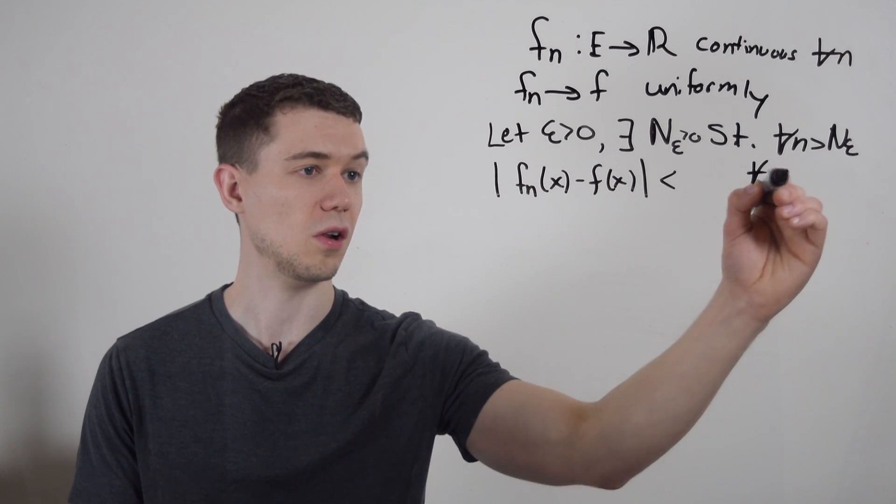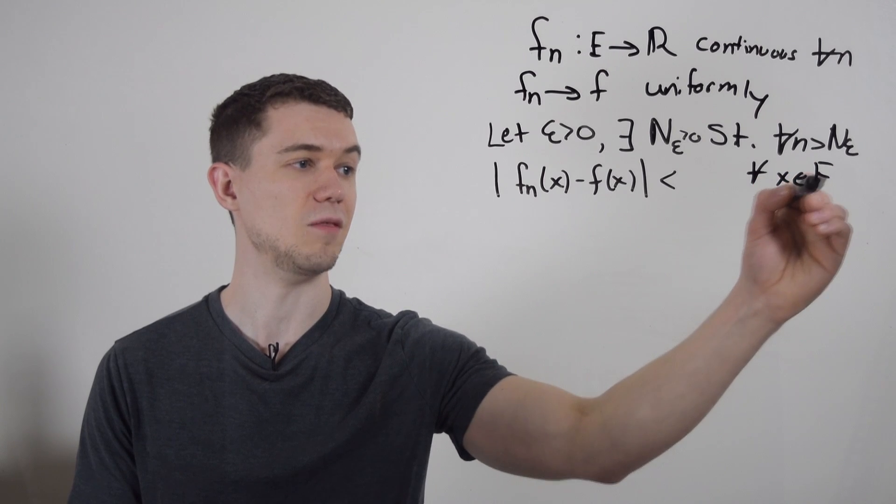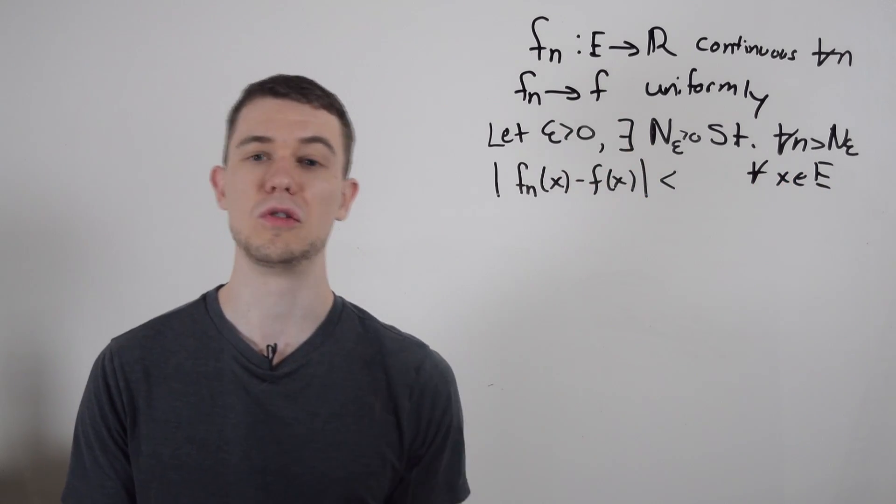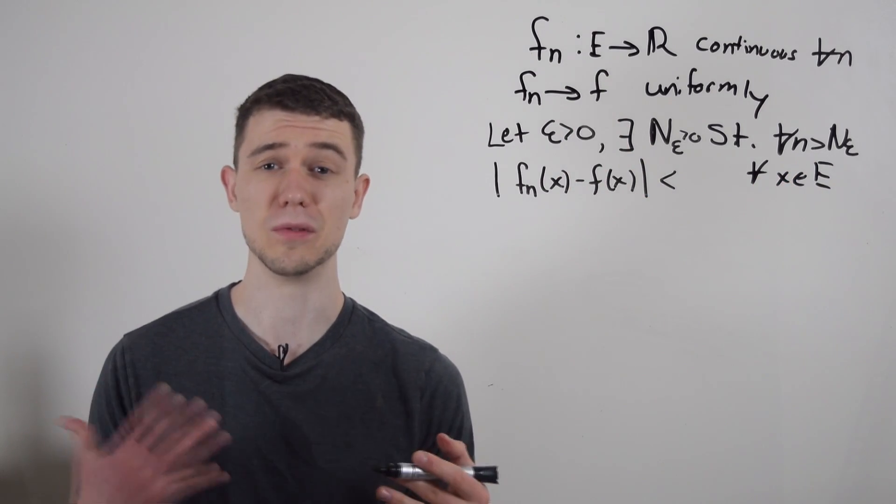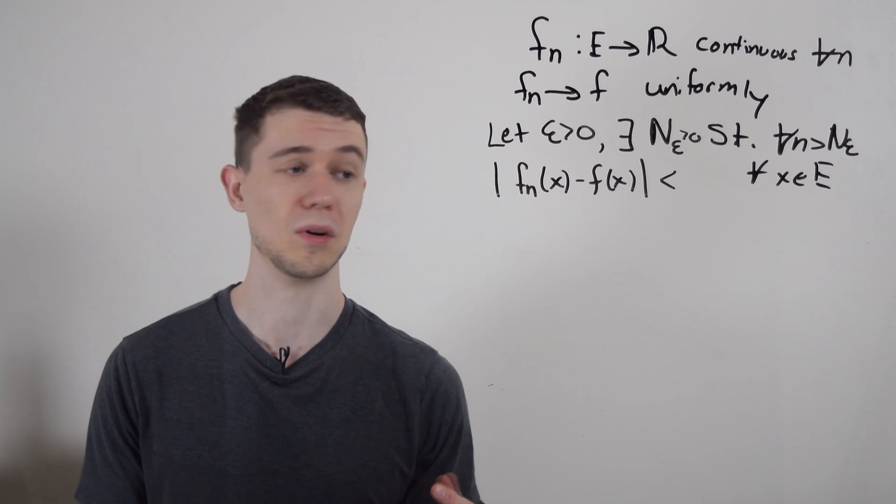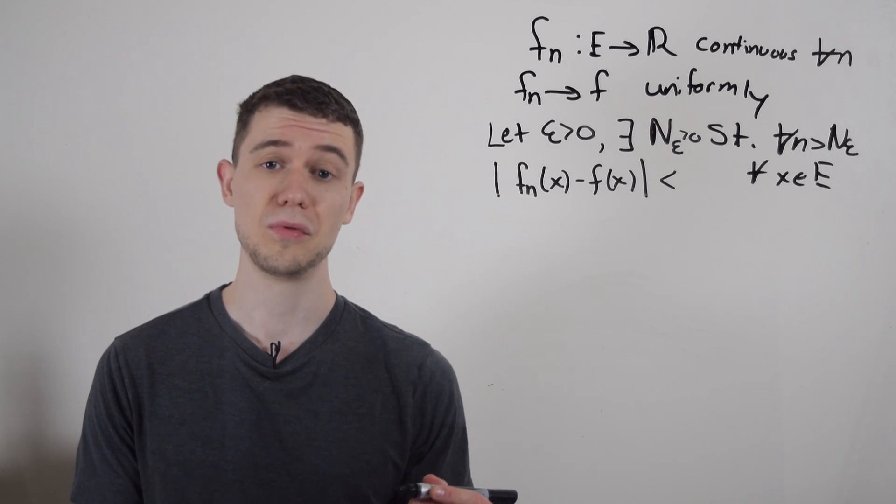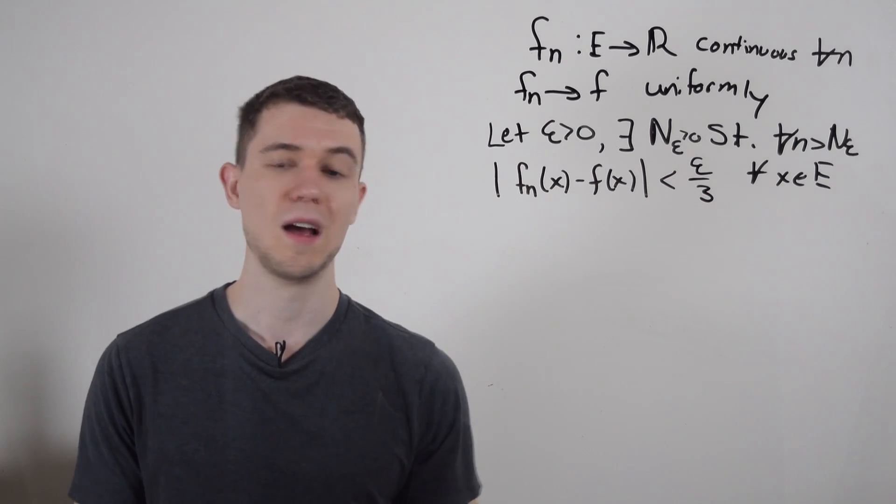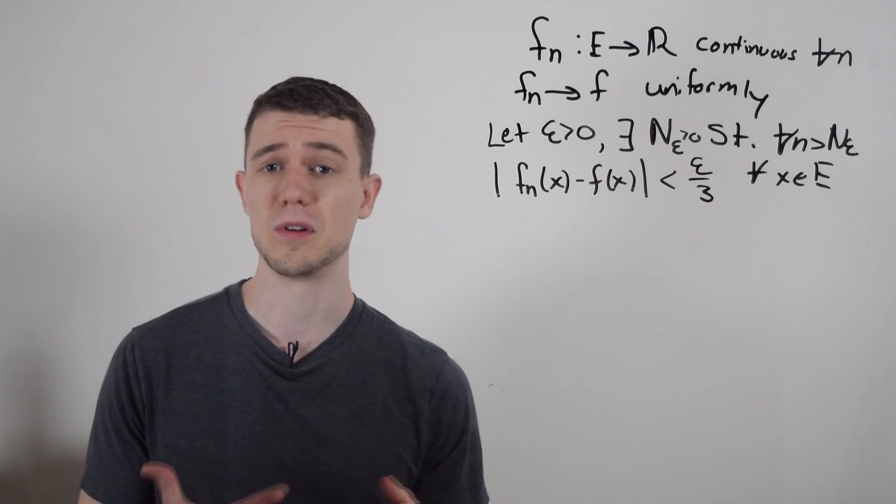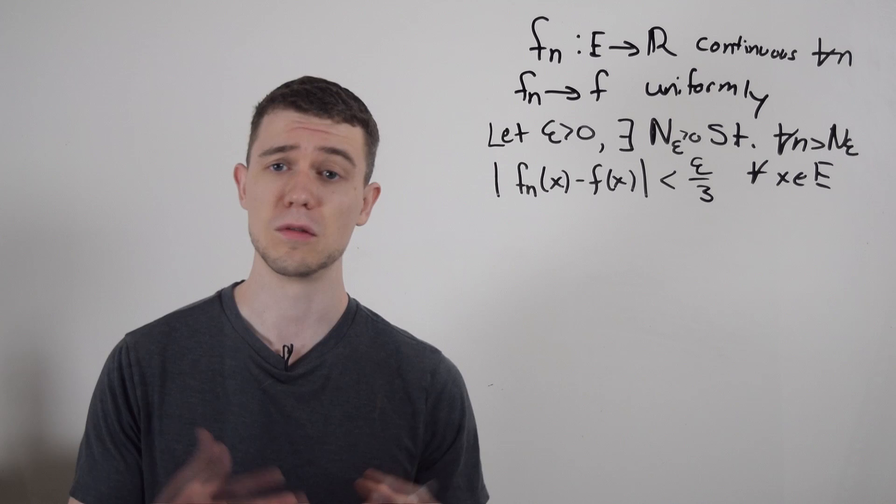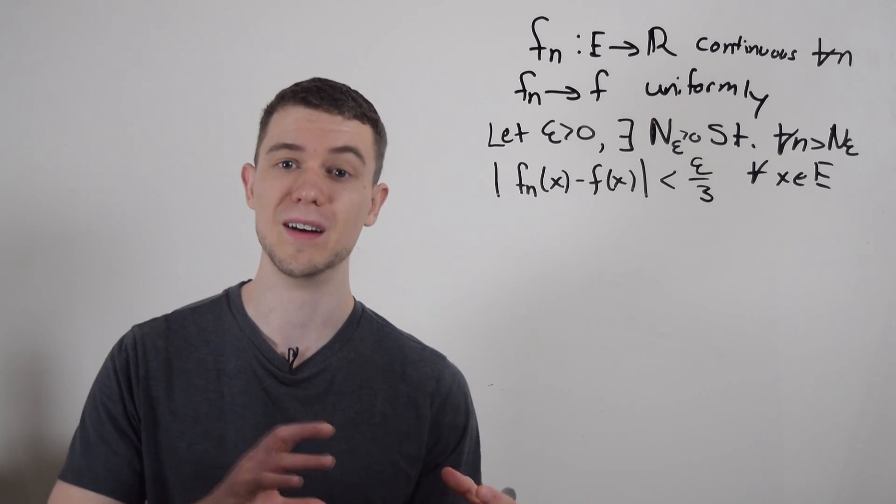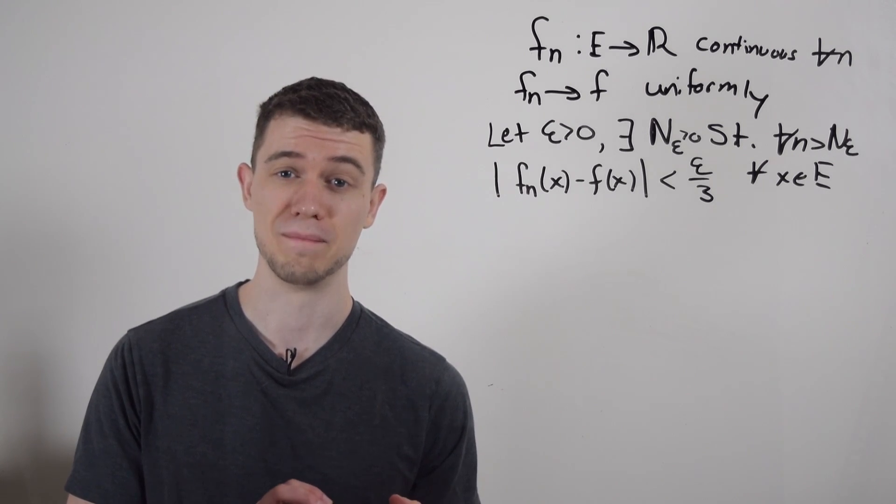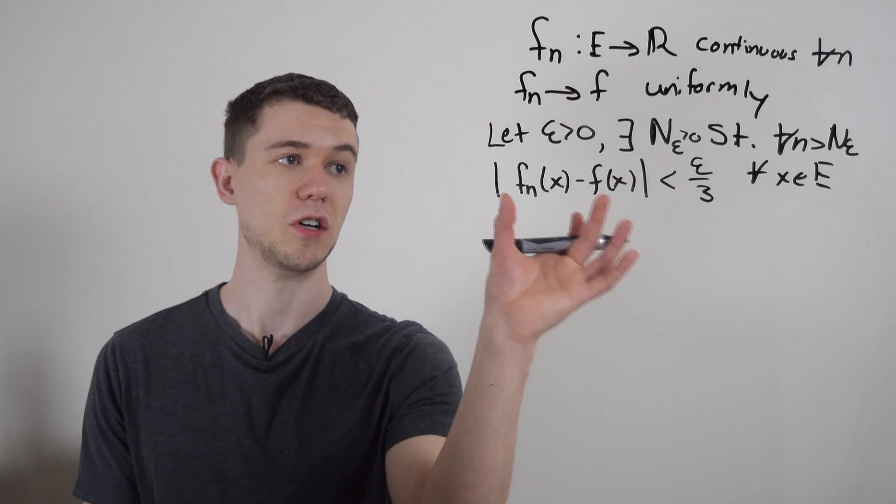for all little x in E, where E is the domain. Usually it's just signified by a closed interval a, b. I'll just call it E for shorthand. Now in this proof, I'm actually going to make it less than epsilon over three. Since this is smaller than epsilon, I can make it arbitrarily small, so I'll just make it epsilon over three for the significance of this proof. So that's what it means to converge uniformly.